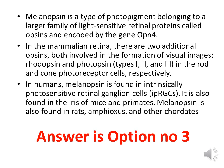Knowing more about melanopsin: melanopsins are a type of photopigment belonging to the large family of light-sensitive retinal proteins called opsins, encoded by the gene OPN4. In the mammalian retina, in addition to melanopsin, there are two additional opsins — rhodopsin and photopsin — present in rod and cone photoreceptor cells. In humans, melanopsin is found in intrinsically photosensitive retinal ganglion cells. So option 3, ganglion cells, is the correct answer.